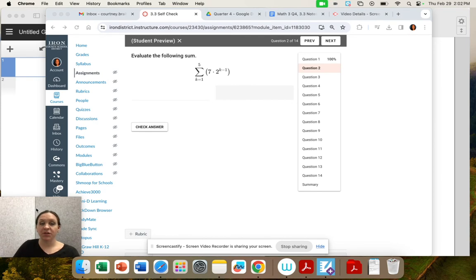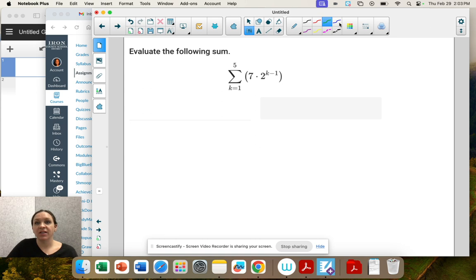Evaluate the following sum. We're adding up five numbers because we start at k equals 1 and we go till 5.